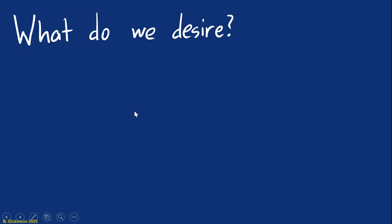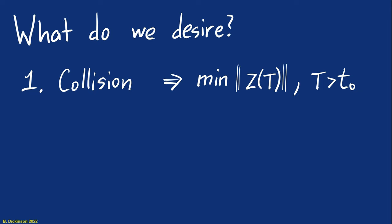So now that's stated, what do we desire? First thing, let's say we want collision. Okay, mathematically, how do we express that? Well, we could say that collision implies that we want to minimize at some future time the relative distance between the pursuer and target. And so we can state minimize the norm of the relative position at time t where t is greater than the initial time.